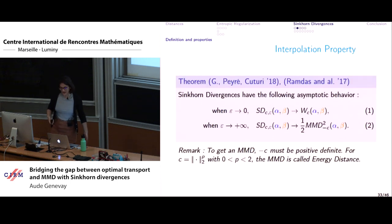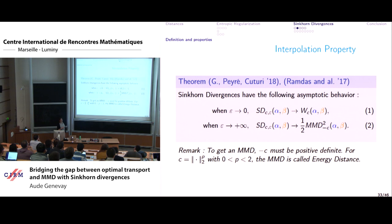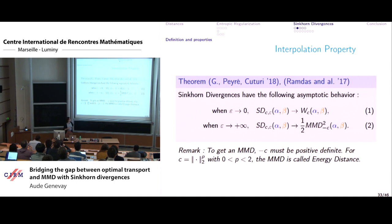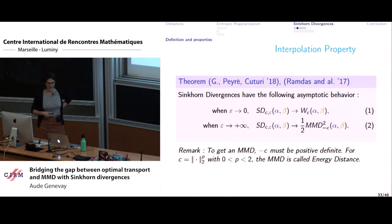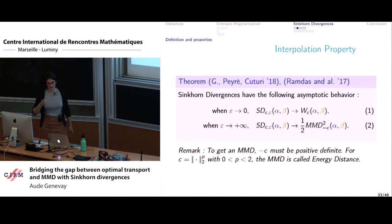We call these Sinkhorn divergences: regularized optimal transport minus the two cross terms that ensure the quantity equals zero when alpha equals beta. This also has a nice interpolation property: when epsilon goes to zero, you recover the classic Wasserstein distance. More surprisingly, when epsilon goes to infinity, the Sinkhorn divergence converges to an MMD where the kernel function is minus the cost of optimal transport — for cost functions that are a power of Euclidean distance strictly less than 2, this gives the energy distance.